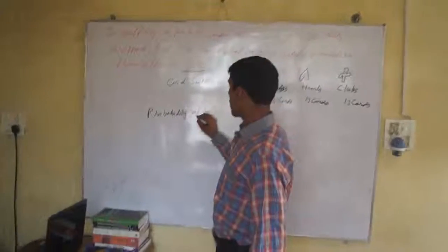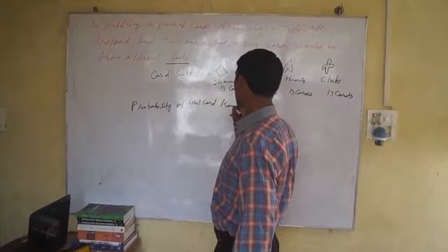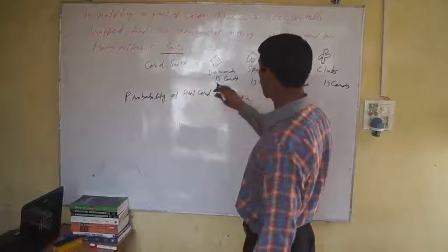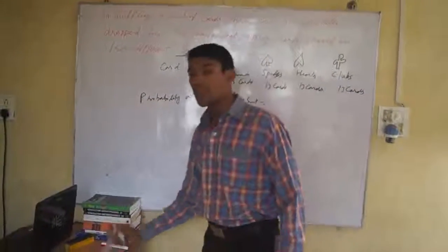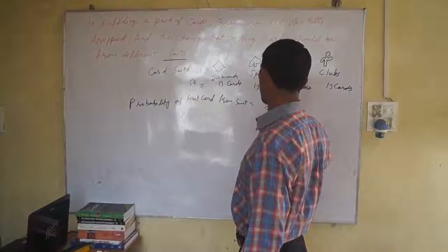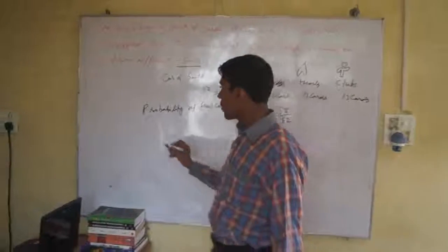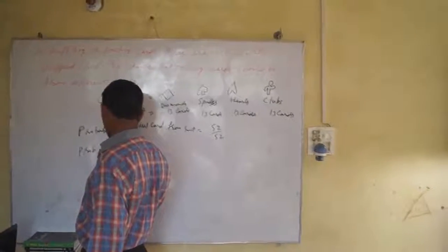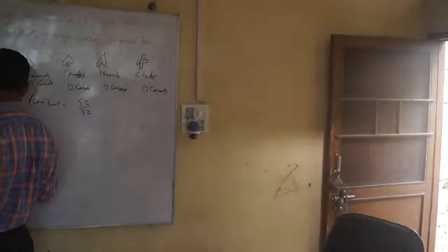Probability of first card from any suit: it is 52 cards and chance of getting this card from any suit, so this is 52 divided by 52. This is the favorable number and this is the total number. Probability of second card from different suit...